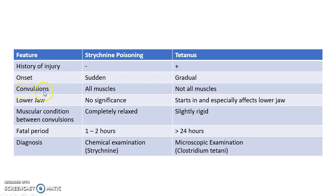Coming to the nature of convulsions, in Strychnine poisoning all muscles will be involved, whereas in case of tetanus not all muscles will be involved at a time.